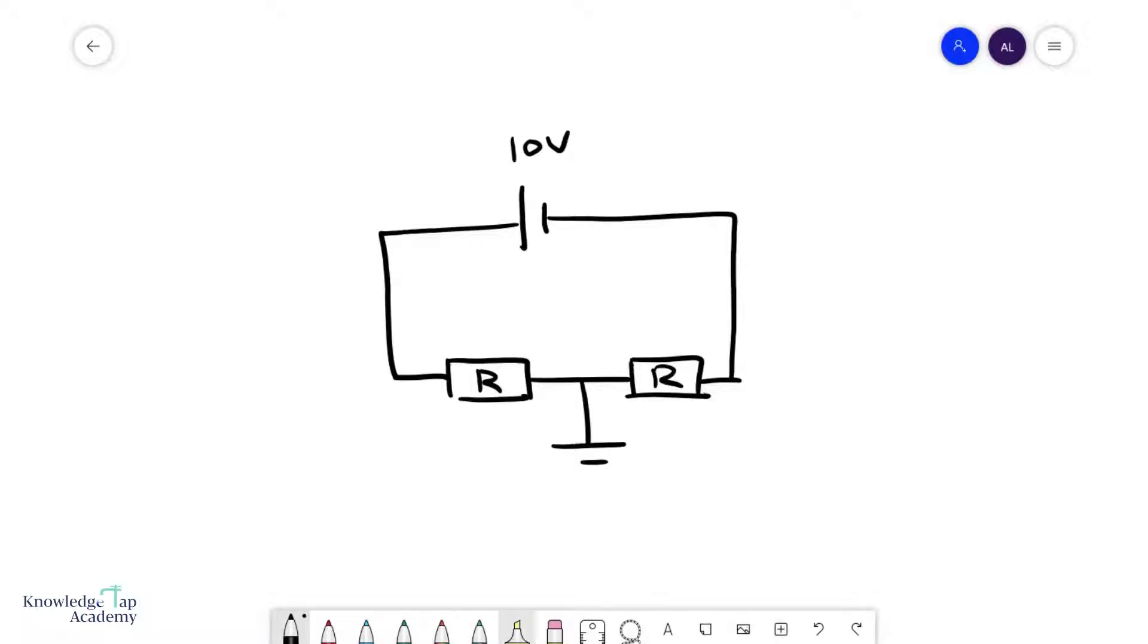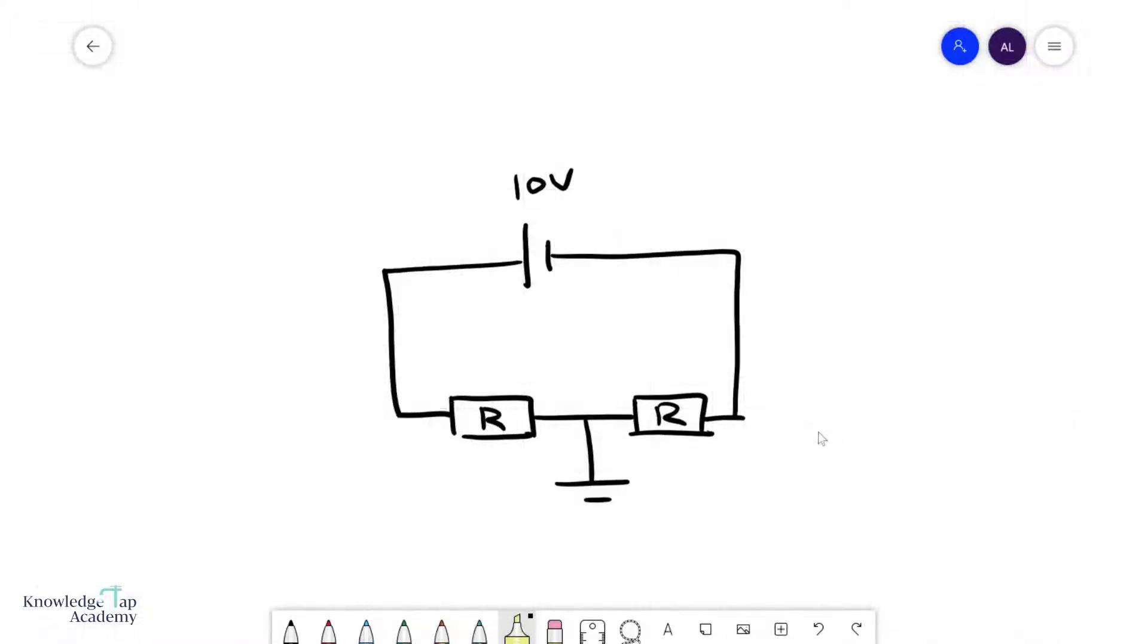In this video, we're going to discuss how to deal with earth. Sometimes in an electrical circuit, you may see this little symbol over here that basically means you are earthing that part of the circuit. In A-levels, we must understand what the earth actually does: it sets the potential at that point to be zero volts.